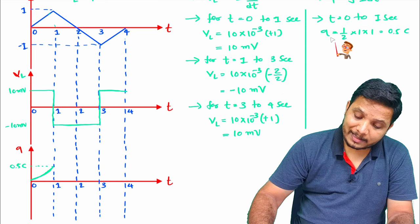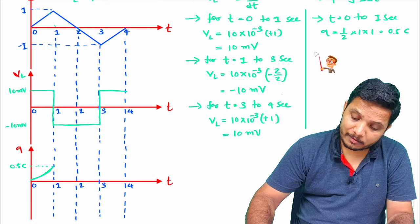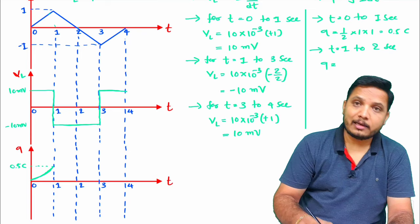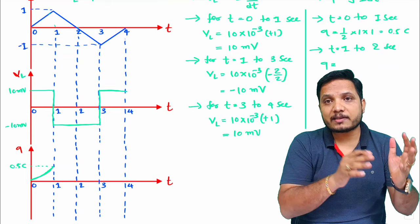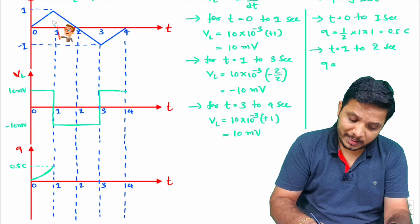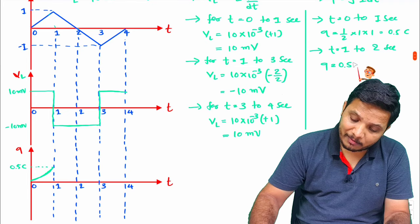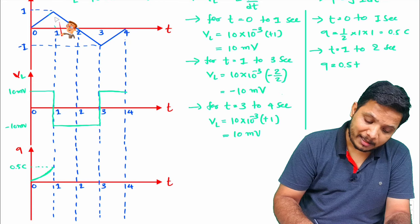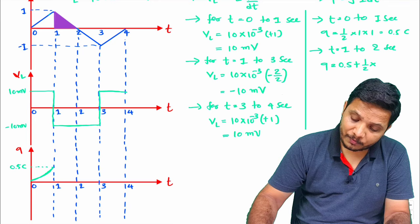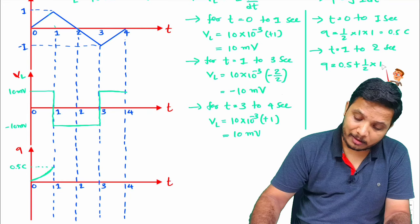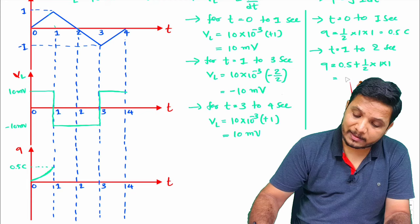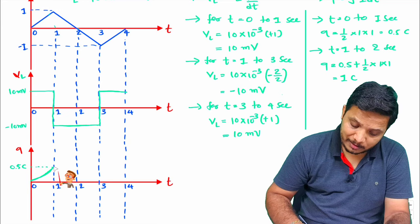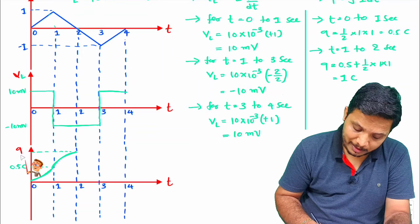To calculate charge at 2 seconds, remember that the resultant charge equals the previous charge plus the new area charge. The charge from 0 to 1 second is 0.5 C, plus this new area which is again ½ × 1 × 1 = 0.5 C. So total charge at 2 seconds is 0.5 + 0.5 = 1 Coulomb.